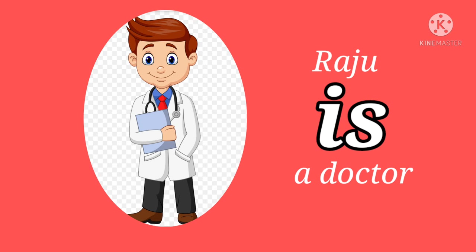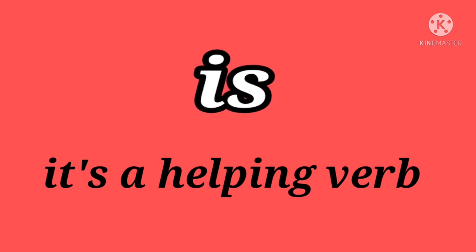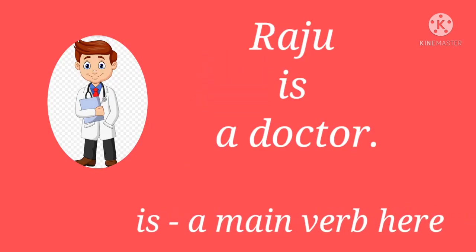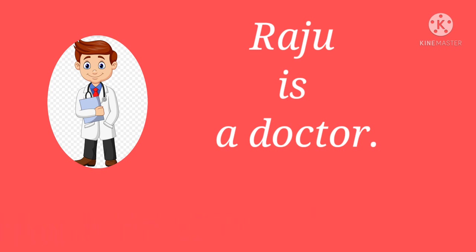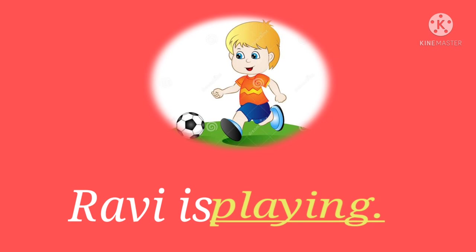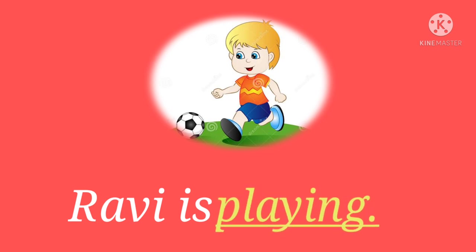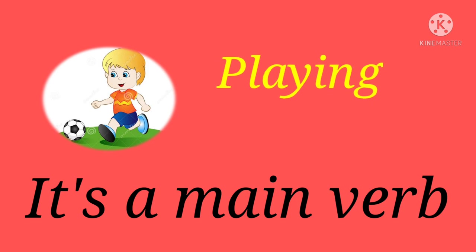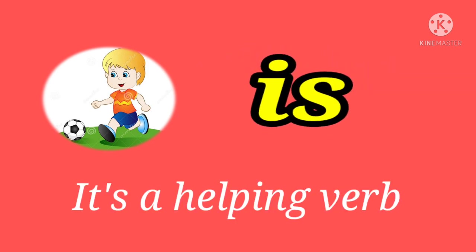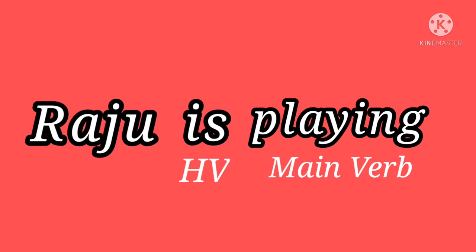Let us see another sentence: 'Raju is a doctor.' Which is the verb here? Yeah, you are right — 'is.' It's actually a helping verb, but in the absence of a main verb, it's acting here as a main verb and indicates the state of the noun. Now look at the third sentence: 'Ravi is playing.' The word 'playing' is the main verb and 'is' is a helping verb. In this sentence, 'is' remains a helping verb in the presence of the main verb 'playing.'